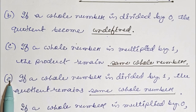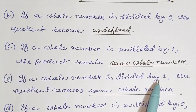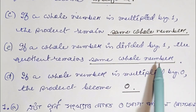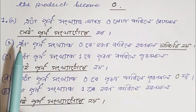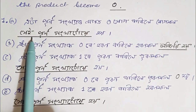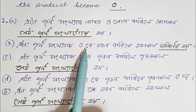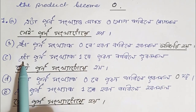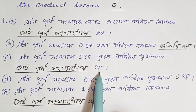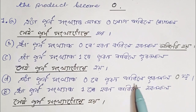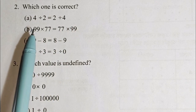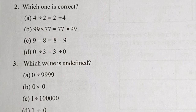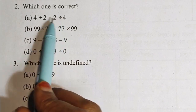If the whole number is divided by 1, the quotient remains the same whole number. If the whole number is multiplied by 0, the product becomes 0. If the whole number is divided by 0, the answer is undefined.